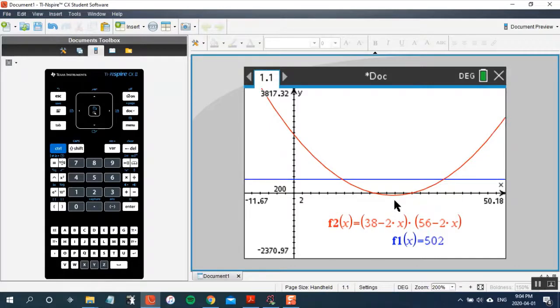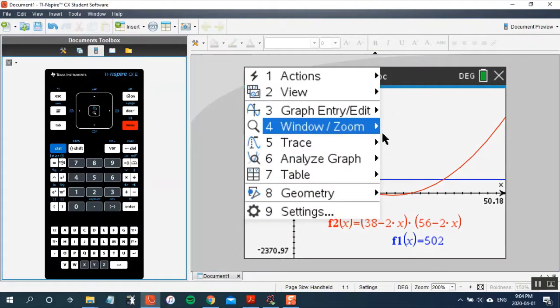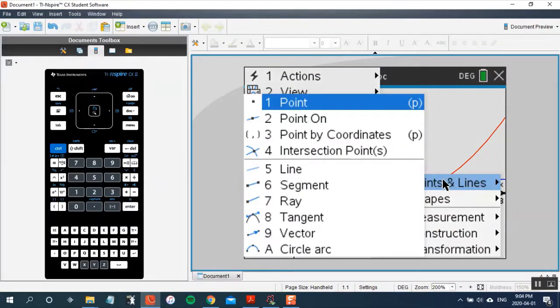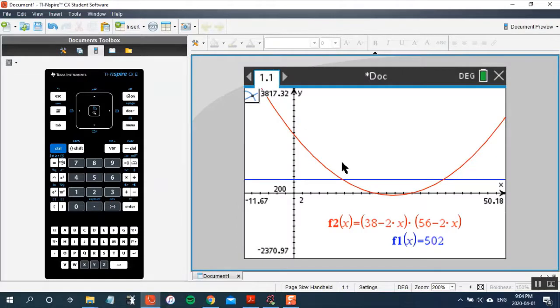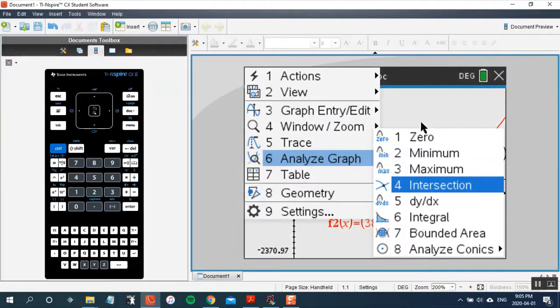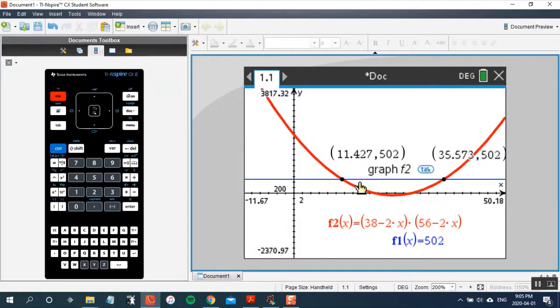We're not interested in intercepts or the minimum value of that quadratic - we're interested in those two points of intersection, which are two possible X values. Remember, X is the size of the corners we're cutting out of the cardboard to make the box. Instead of trying to find intersection points under analyze graph, the geometry feature is slickest. Click on geometry, then intersection points, and just click on the two functions. It shows me both intersection points, which is pretty slick. You have to be in document mode to use that geometry feature.